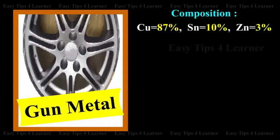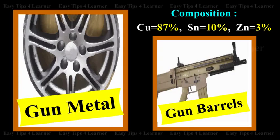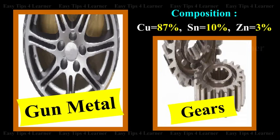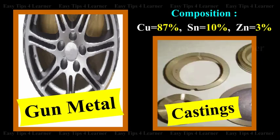Gun metal is an alloy of copper with the composition: copper 87 percent, tin 10 percent, and zinc 3 percent. The uses are for making gun barrels, gears, castings, etc.